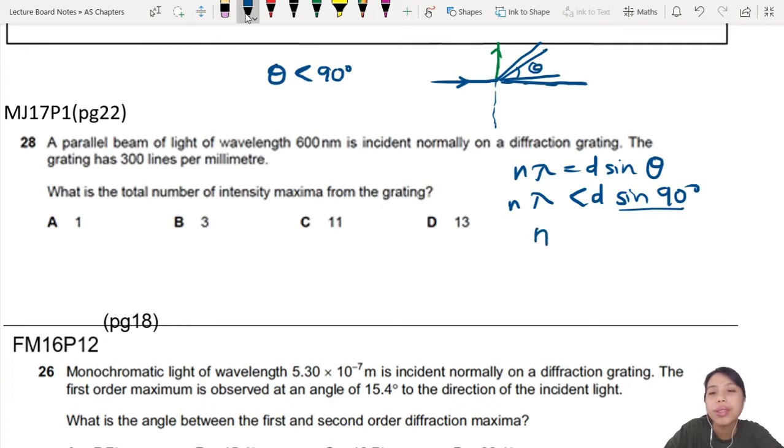So you have n equals—what's our d? 300 lines per millimeter, so we need to find d: 1 millimeter divided into 300 parts.